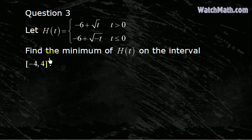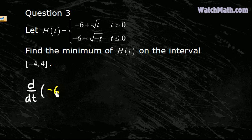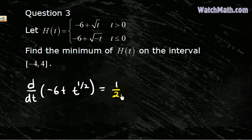So we know this function always has a minimum on this closed interval. First we need to find the critical numbers. If we take the derivative of the first expression, writing t to the one-half, the derivative is one-half t to the negative one-half, or we can write it as 1 over 2 square root of t.